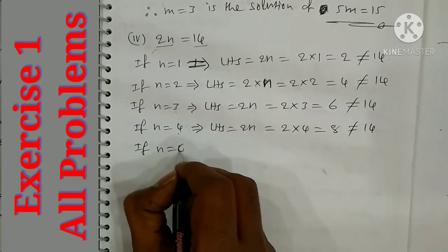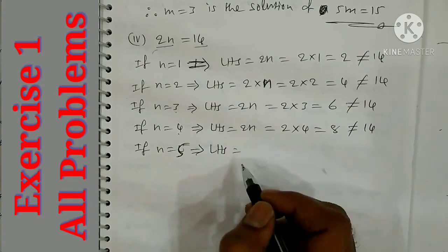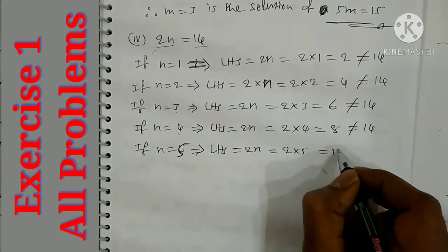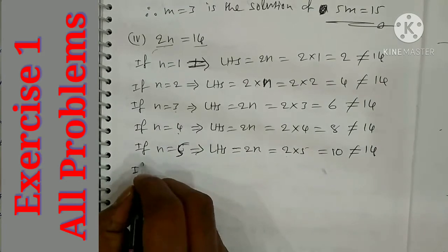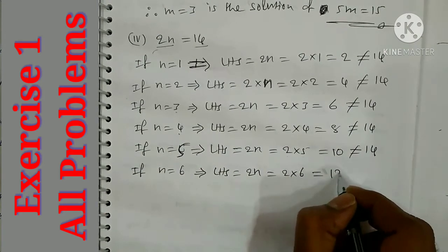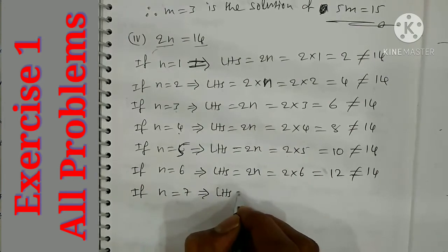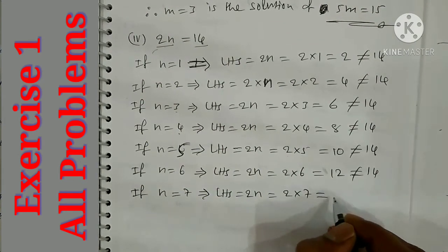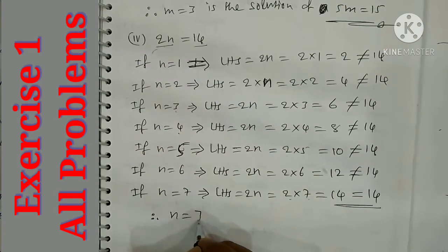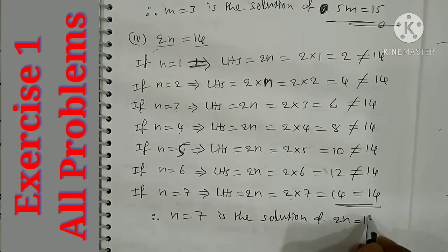If n is equal to 5, then LHS is 2 into 5 equal to 10 — not equal to 14. If n is equal to 6, then LHS is 2 into 6 equal to 12 — not equal to 14. If n is equal to 7, then LHS is 2 into 7 equal to 14, which is equal to 14. So we got the answer. Therefore n is equal to 7 is the solution of 2n equals 14.